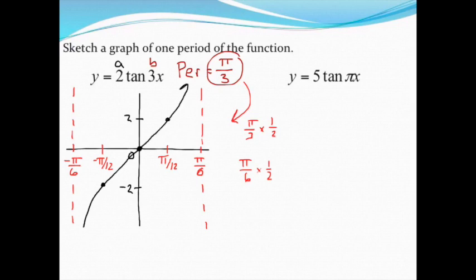They want to go through those two points, and they're going to kind of flatten, curve out, and approach those asymptotes. So there is one period of this first tangent wave.